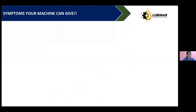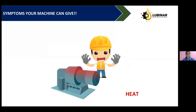Whenever a machine fails, it gives a number of symptoms, just like our body. The first symptom is heat. A lubricant in a system has two main roles: to reduce friction between moving surfaces, and to dissipate heat generated during the process. The presence of contaminations in the oil degrades both properties and hampers function. A rise in temperature is a clear-cut indication that your system is not good.